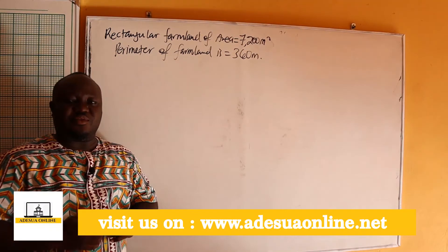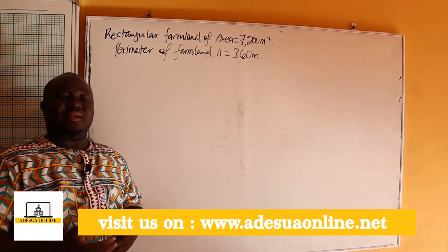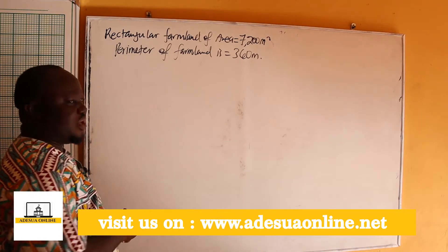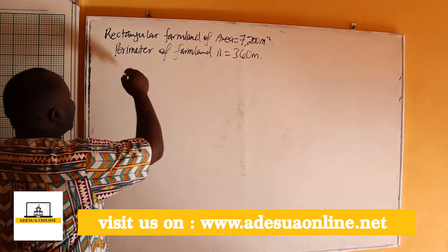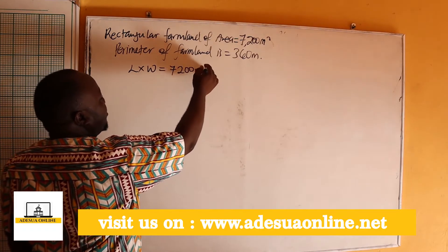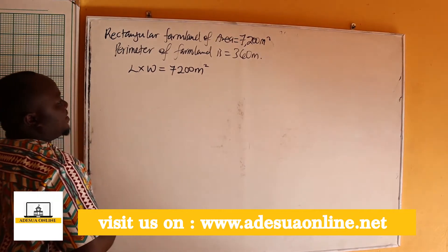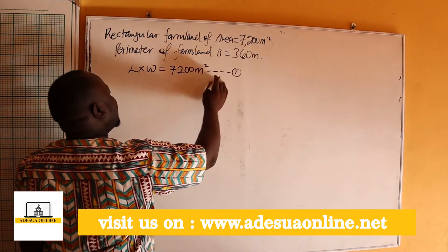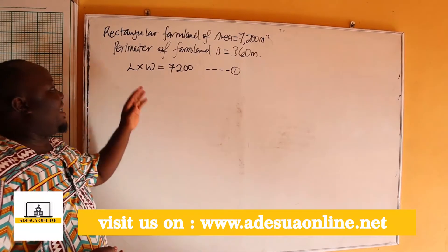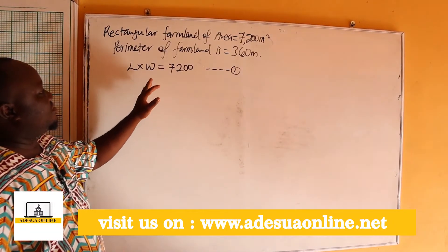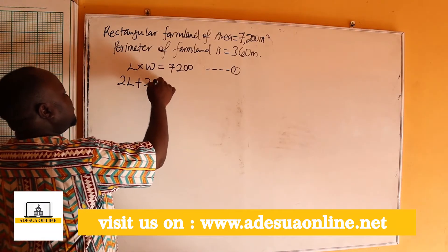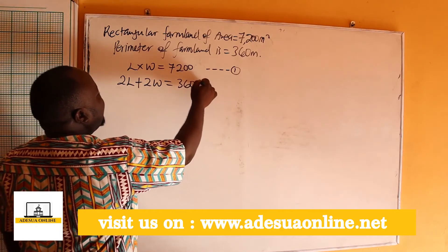Because this is rectangular, the area of any rectangle is length times width. So we can say that length times width equals 7,200 square meters — this is equation 1. The perimeter is 2L plus 2W equals 360 — this is equation 2.